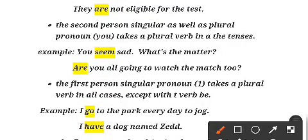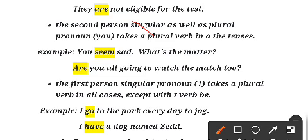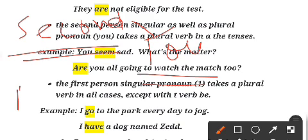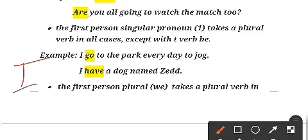The second person — 'you' — whether singular or plural, always takes a plural verb in a tense. For example: 'You seem sad, what's the matter?' and 'Are you all going to watch the match too?' You can see that 'you' always follows a plural verb.